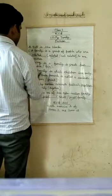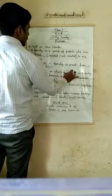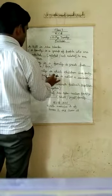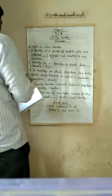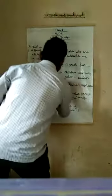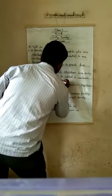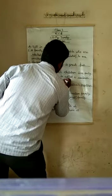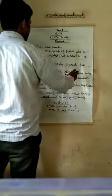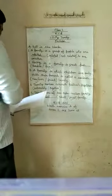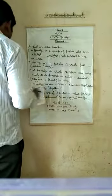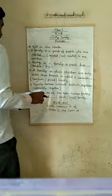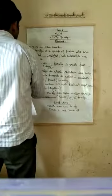Third, a family in which children live only with their parents is called a nuclear family. Ek parivar jismein keval unke bachche aur mata pita hote hain kendriya parivar kahlata hai. Fourth,